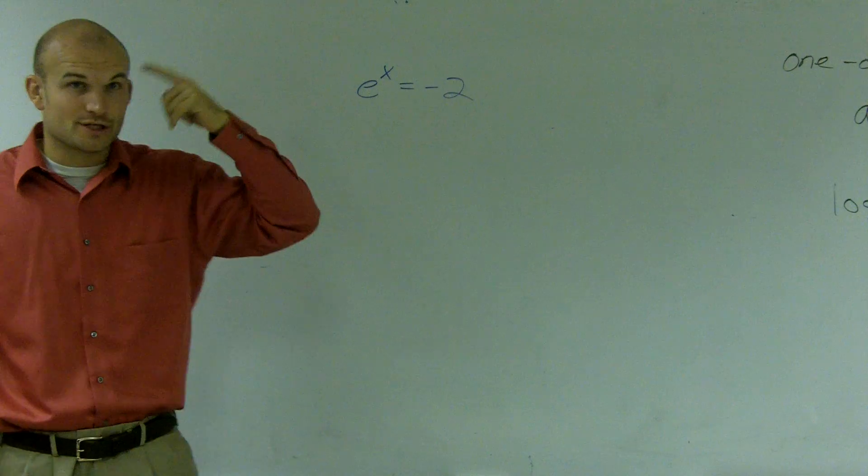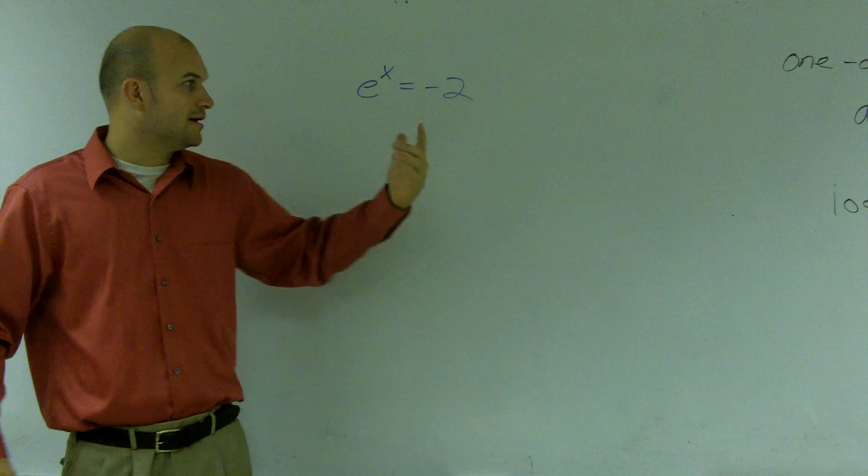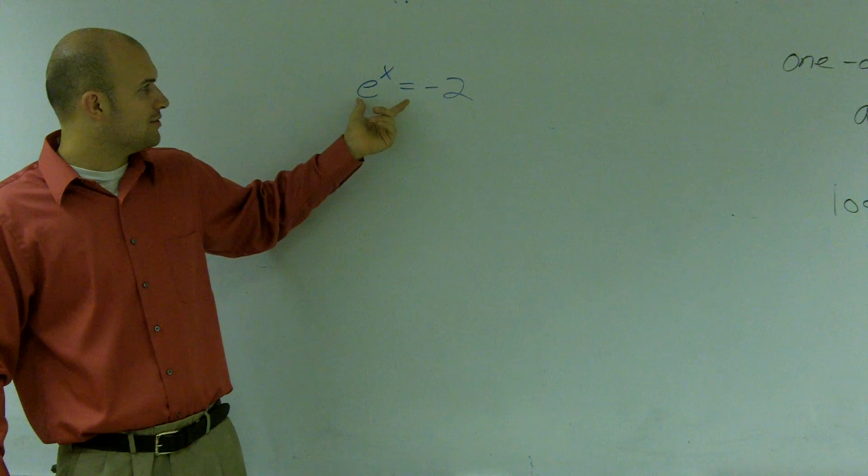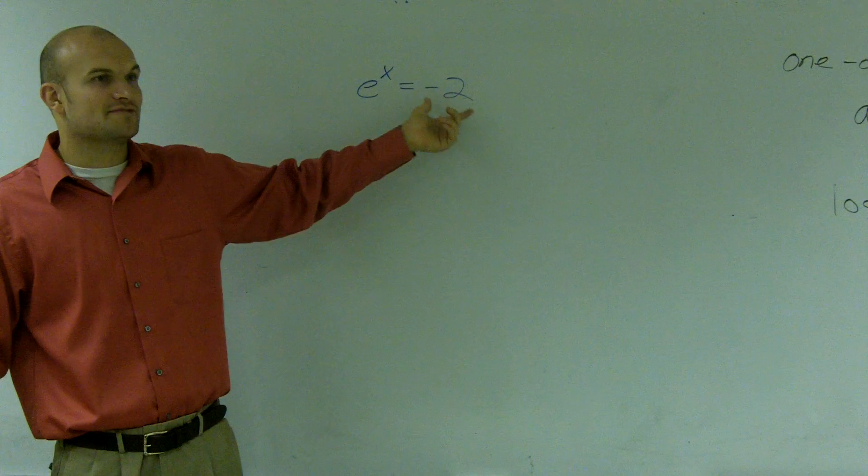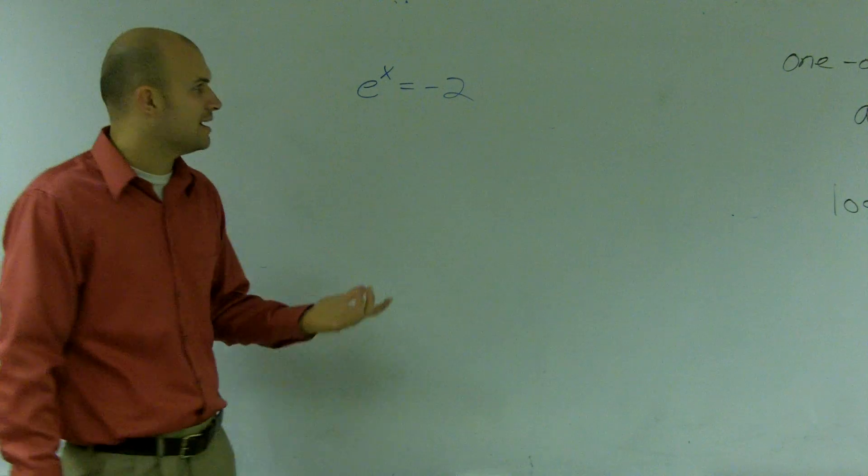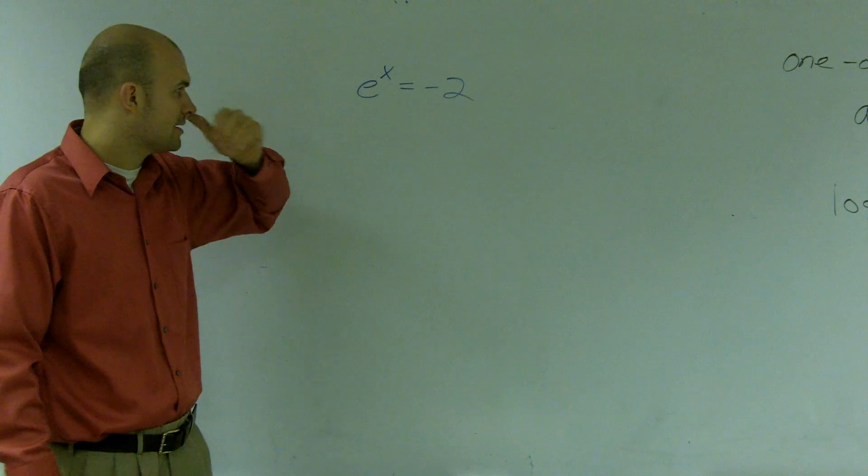This one says e raised to x. So if you're going to use that same logical thinking, I have to put e, you'd have to represent negative 2 as e raised to some number. Well, that can't work because e is an irrational number.